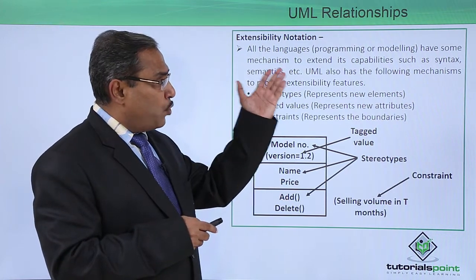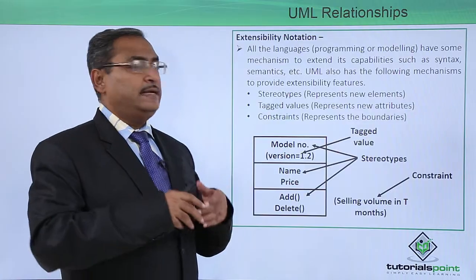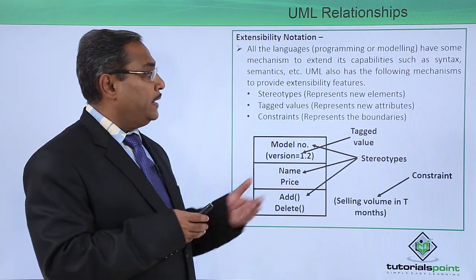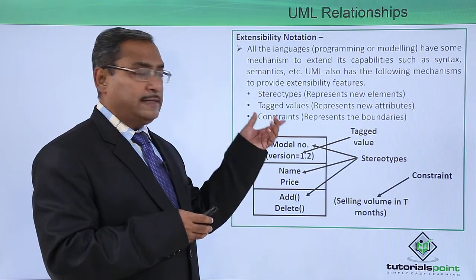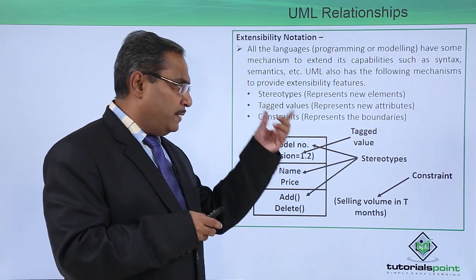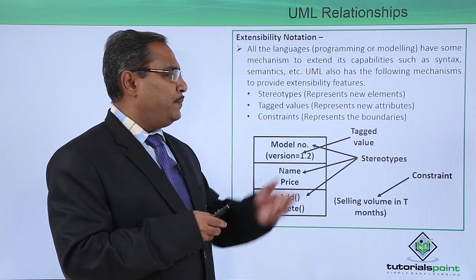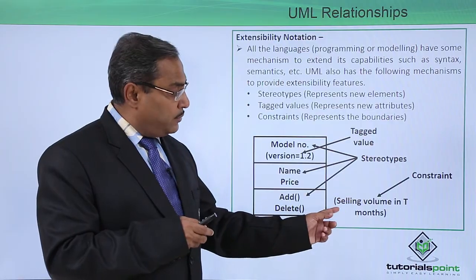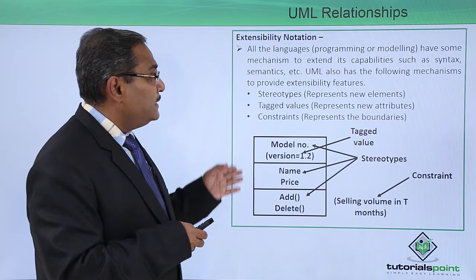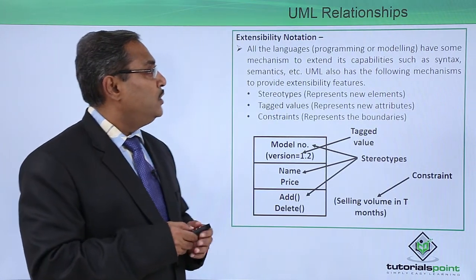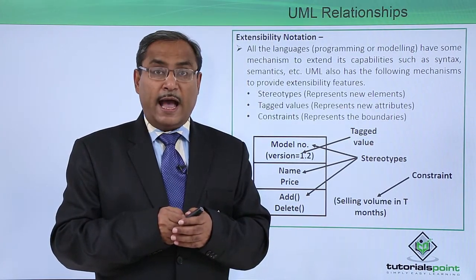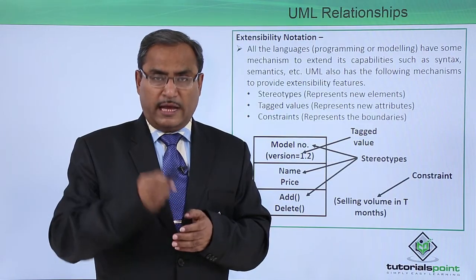All languages, programming or modeling, have some mechanism to extend their capability in the form of syntax (grammar) and semantics (meaning). Stereotypes represent new elements, tag values represent new attributes, and constraints represent boundary conditions such as selling volume in T months. In this way we have discussed UML relationships in more detail with examples. Thanks for watching this video.